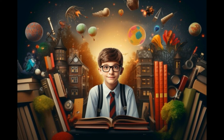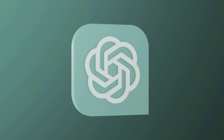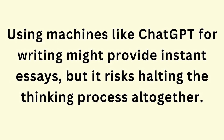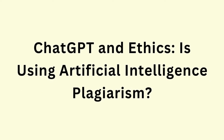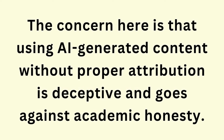Using AI tools like ChatGPT to create content without giving credit to the AI is considered unethical and akin to plagiarism. Plagiarism is when you present someone else's work or ideas as your own without acknowledging them. This applies to all forms of materials, whether print, online, or any other format. The concern is that AI-generated content without proper attribution is deceptive and goes against academic honesty.